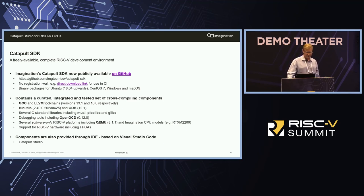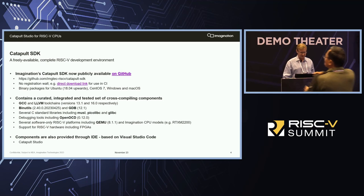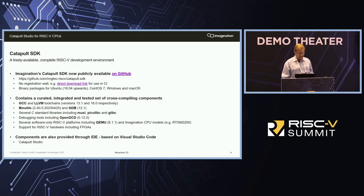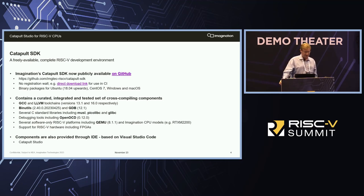It's on GitHub — there are direct links, no registration wall or anything like that. You can download and unpack the binary straight into your CI pipelines if you need to. The packages are for multiple operating systems: Ubuntu 18.04 LTS and upwards, CentOS and other compatible Red Hat Linux distros, Windows, and macOS. What it contains is a curated, integrated, and fully tested set of cross-compiling components.